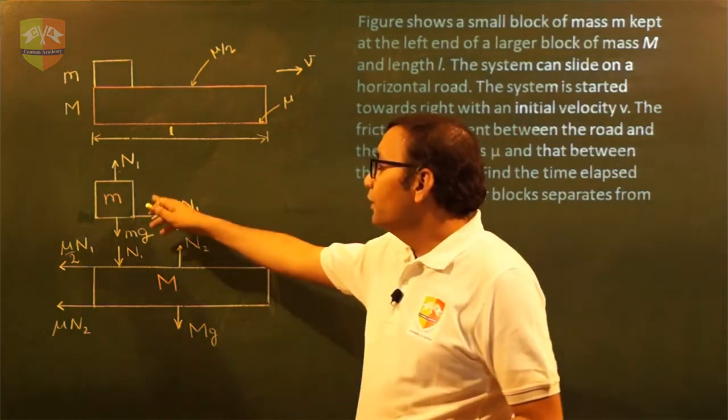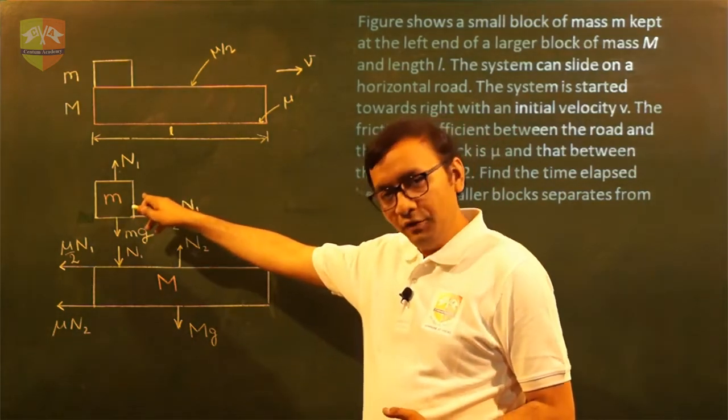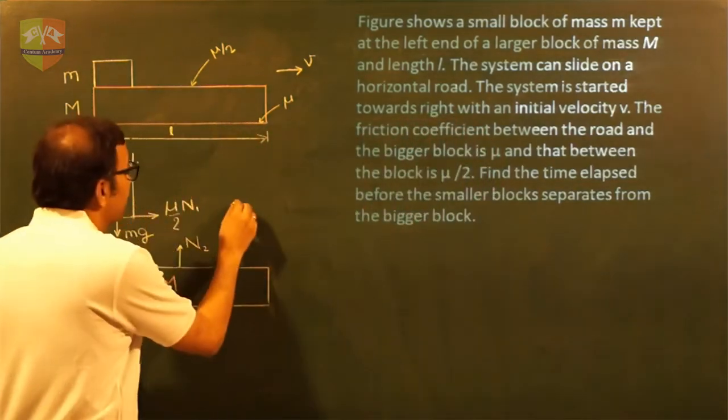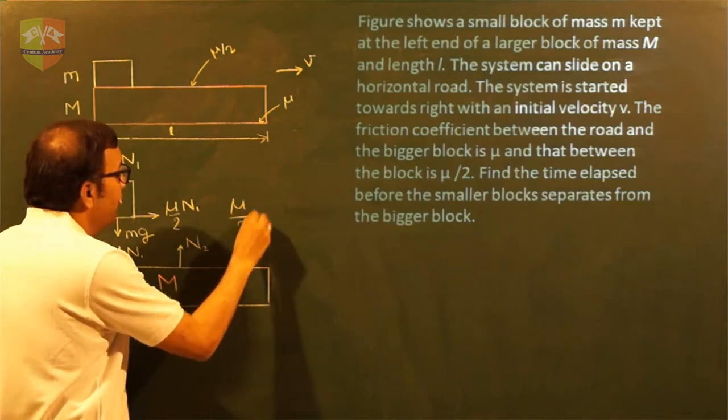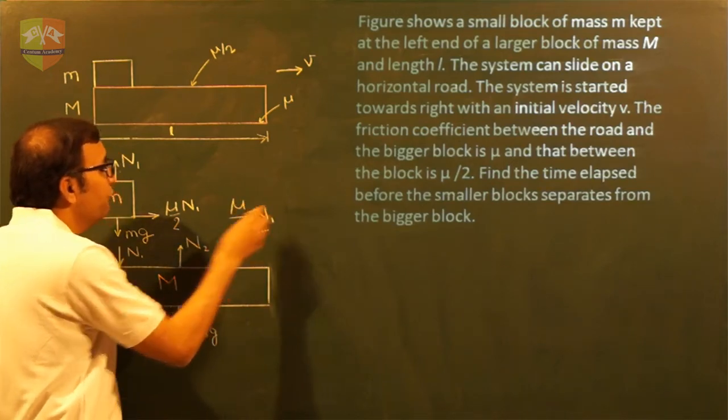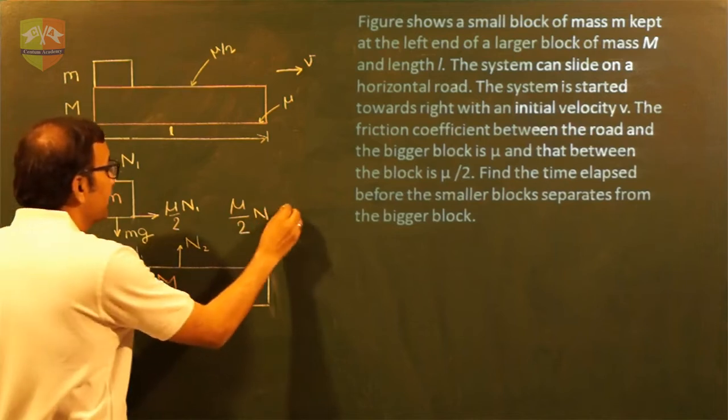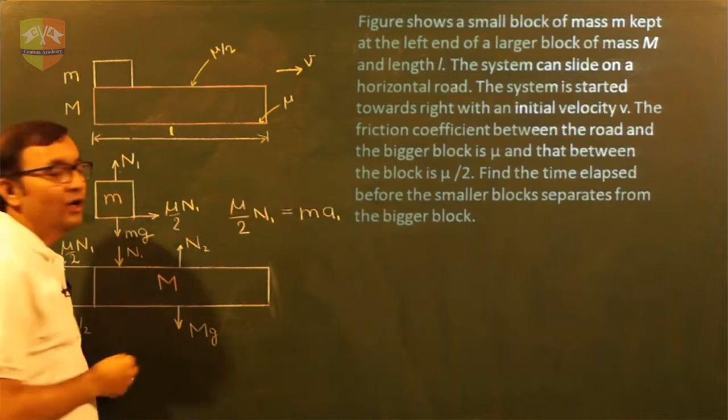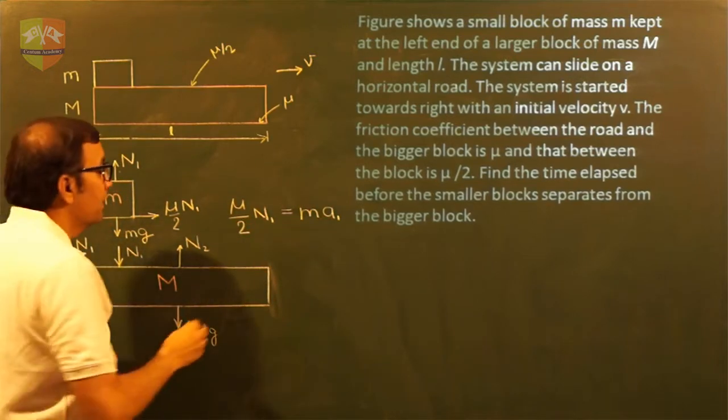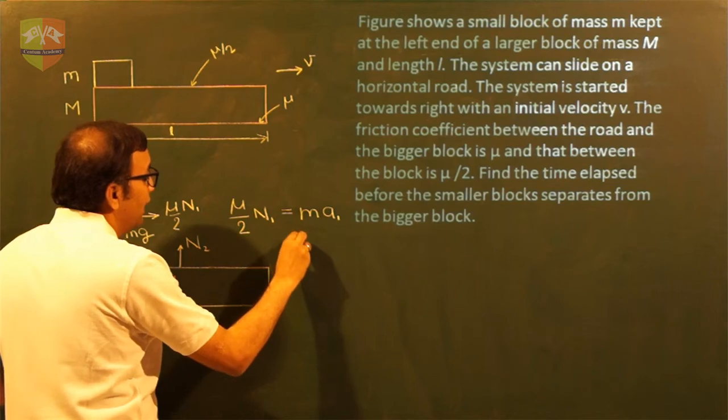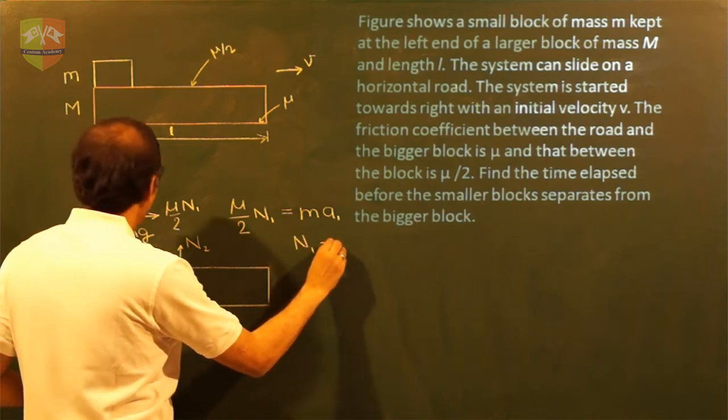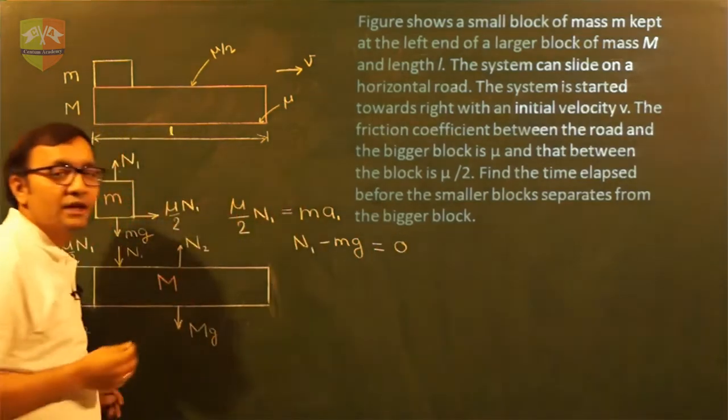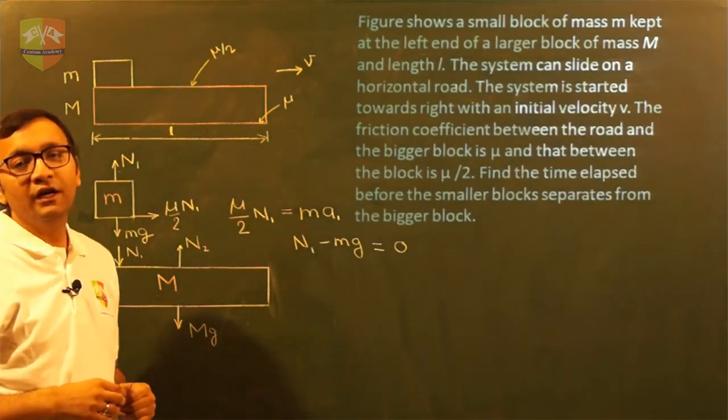So if you write the Newton's second law of equation for small m along horizontal direction, I will get it as mu by 2 N1 is the only force along horizontal direction. This will be equal to mass times acceleration of small m. And along vertical direction, I will get N1 minus mg is equal to 0 since there is no acceleration in vertical direction.